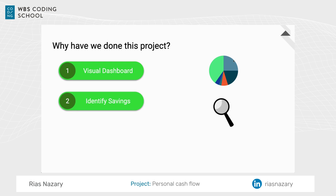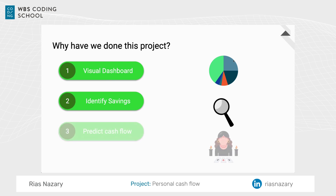Another target was to identify savings — for instance, when it's time to quit a subscription. And as a last target, we ran some predictions about future cash flows.